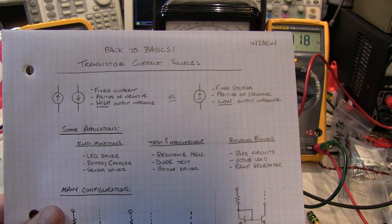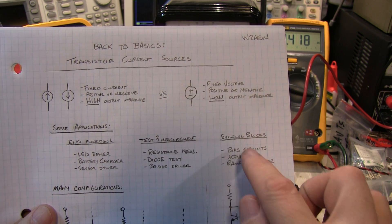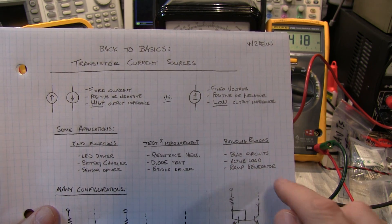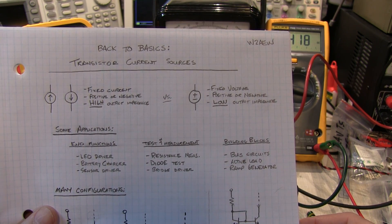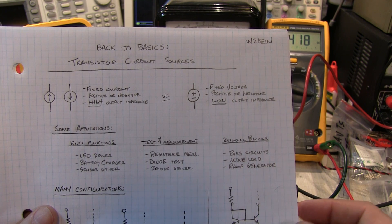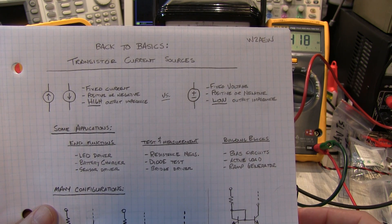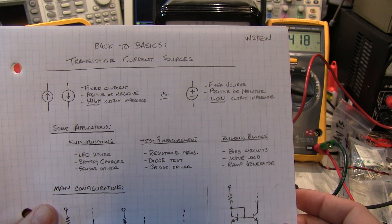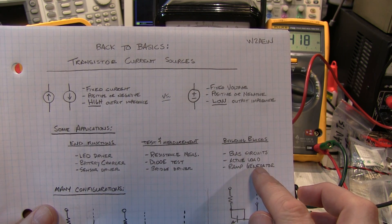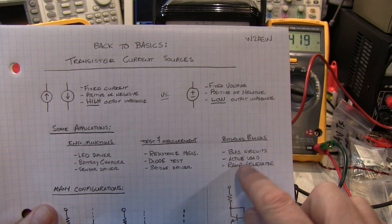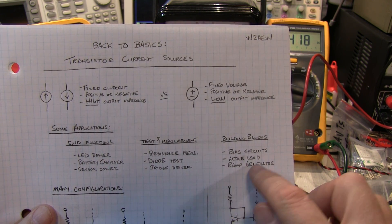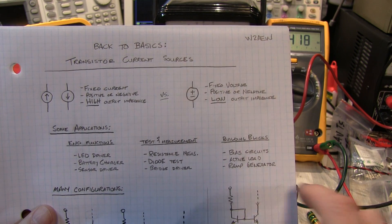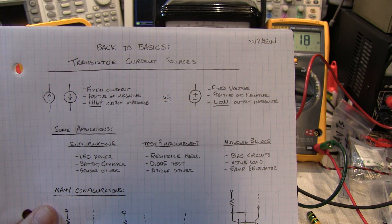You may have bridge drivers for measuring sensors. These current sources are also basic building blocks found in many different circuits. Bias circuits, particularly inside integrated circuits, use current sources extensively. Also as active loads, which can provide a tremendous amount of gain in some very simple circuits. Using a constant current source to charge or discharge a capacitor can make a linear voltage change over time, and these linear voltage ramps can be used as part of sweep generators and other circuits.